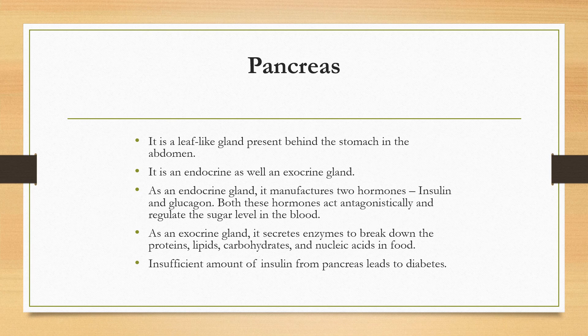The pancreas is a leaf-like gland present behind the stomach in the abdomen. It is both an endocrine and exocrine gland. As an endocrine gland, it manufactures two hormones: insulin and glucagon. Both these hormones act antagonistically and regulate the sugar level in the blood. As an exocrine gland, it secretes enzymes to break down proteins, lipids, carbohydrates and nucleic acids in food and helps in digestion.